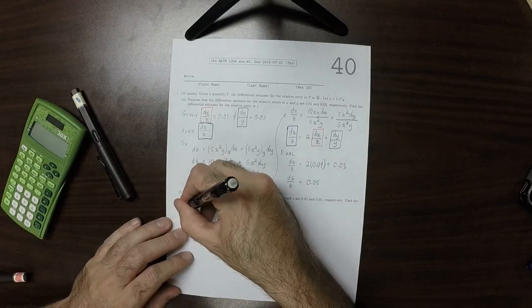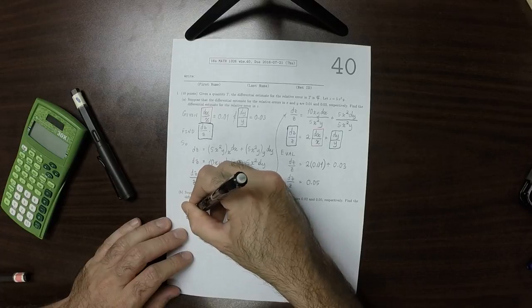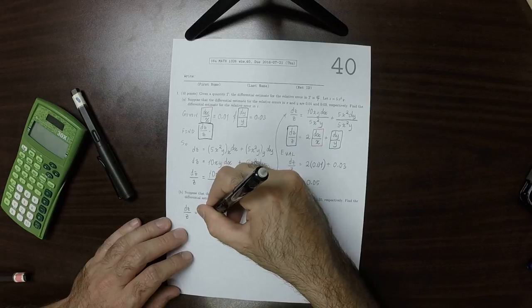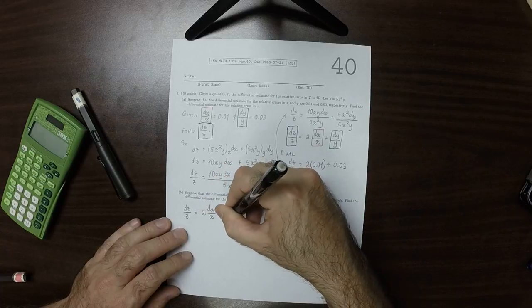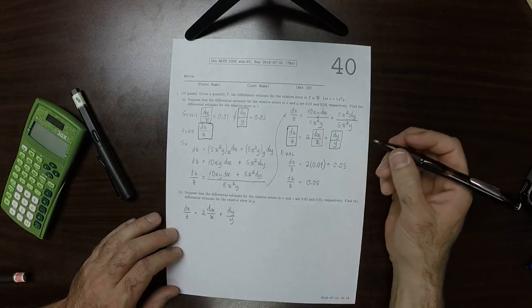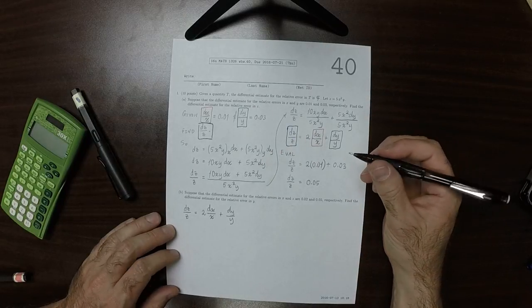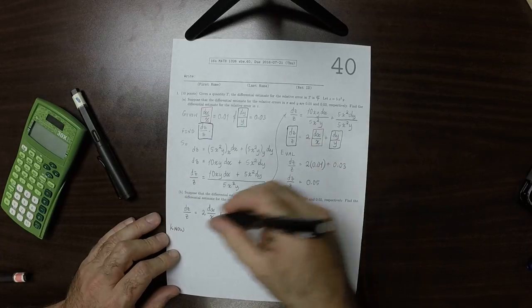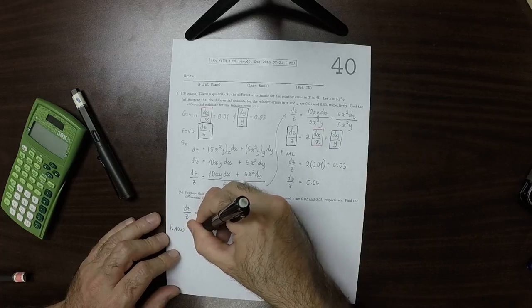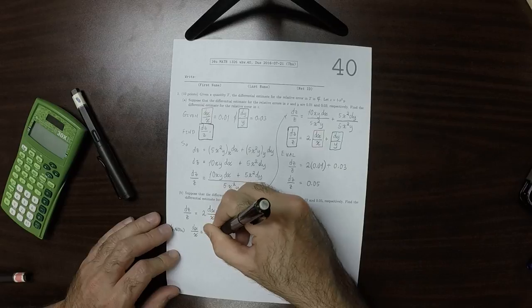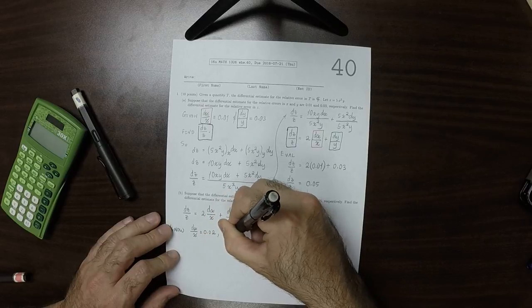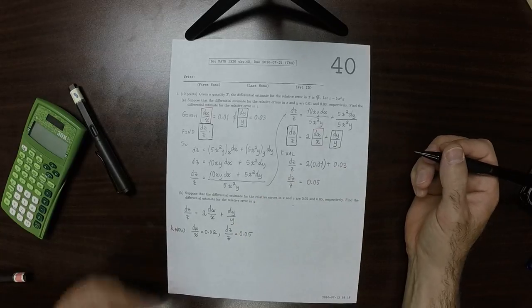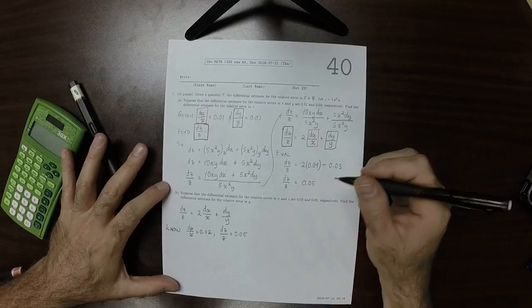So from part a, we know that dz over z is 2 dx over x plus dy over y. And now we'll plug in what we know. So what we know is that dx over x is 0.02, and dz over z is 0.05. And we want to find dy over y.